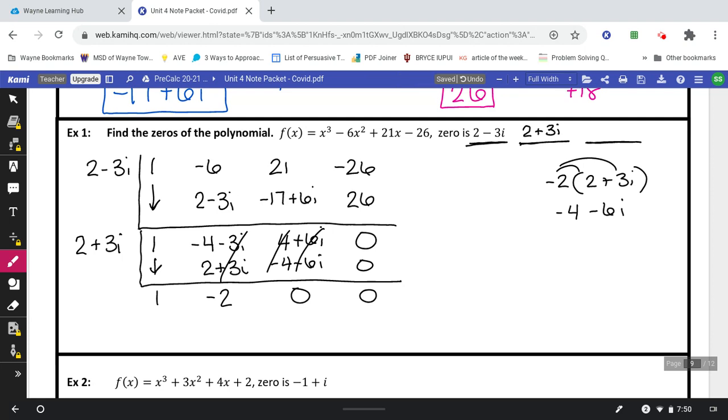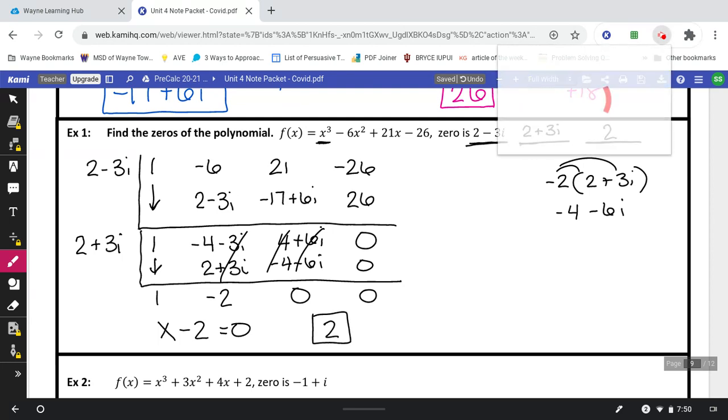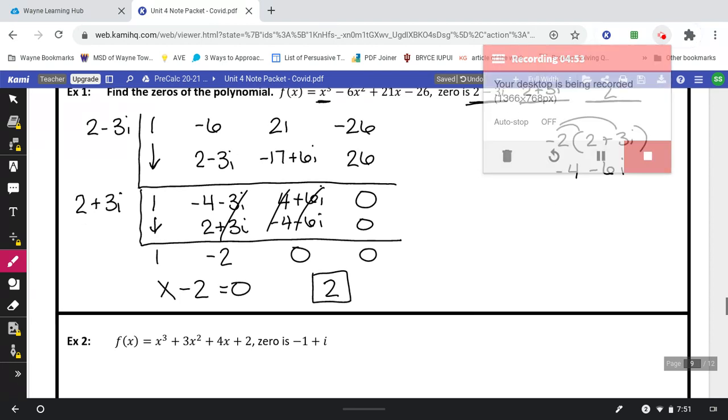So, at the very end, we have to talk about our depressed equation. Our equation started off being x to the third. We did synthetic division twice. So this becomes just a regular x. x minus 2 equals 0, giving us an answer of positive 2.